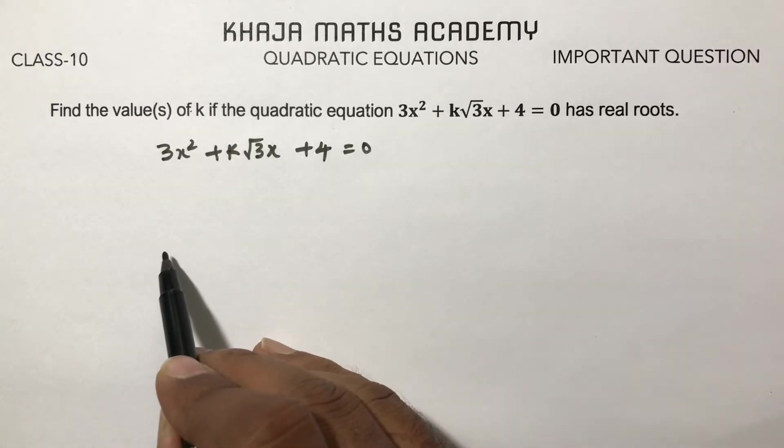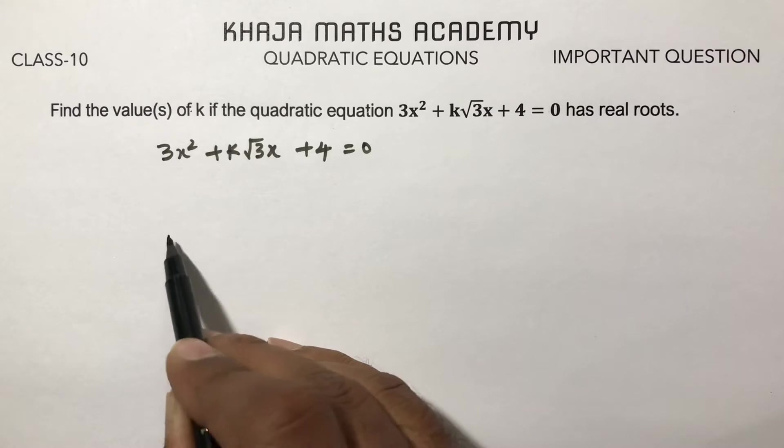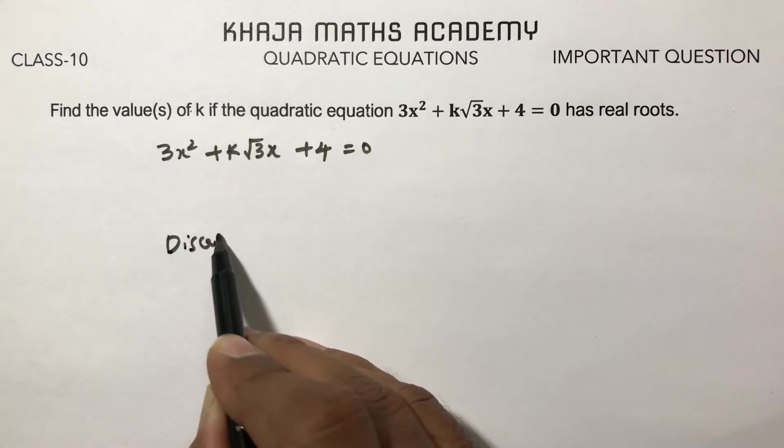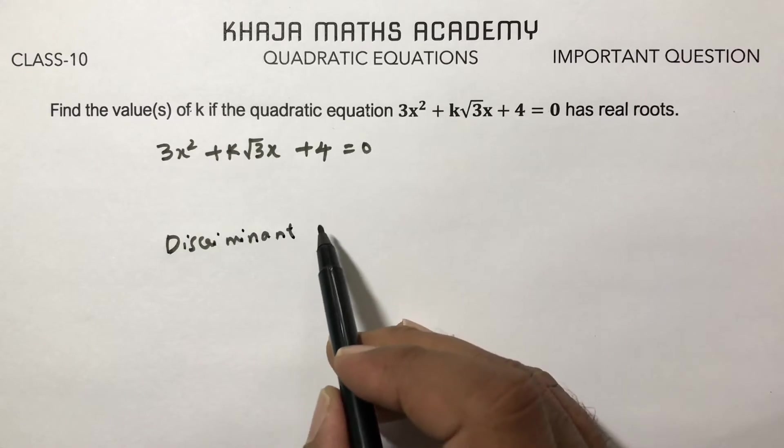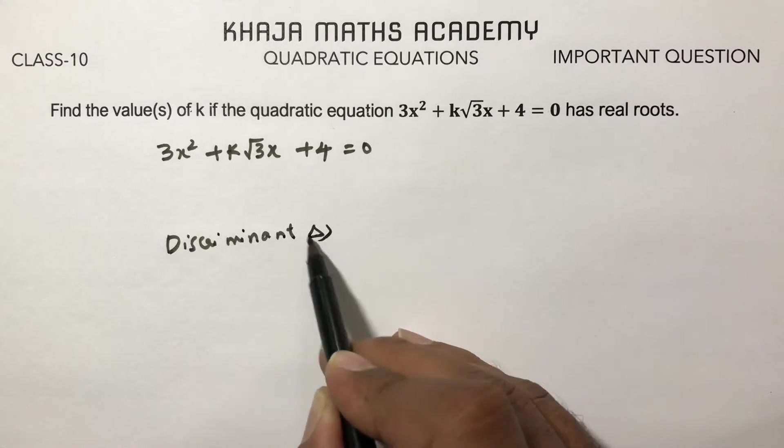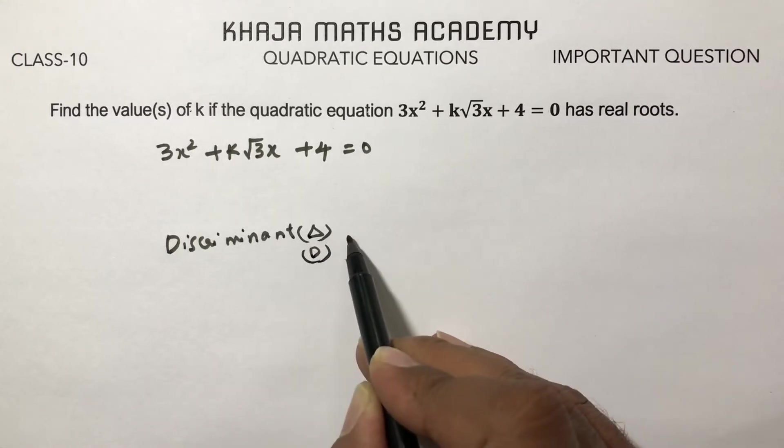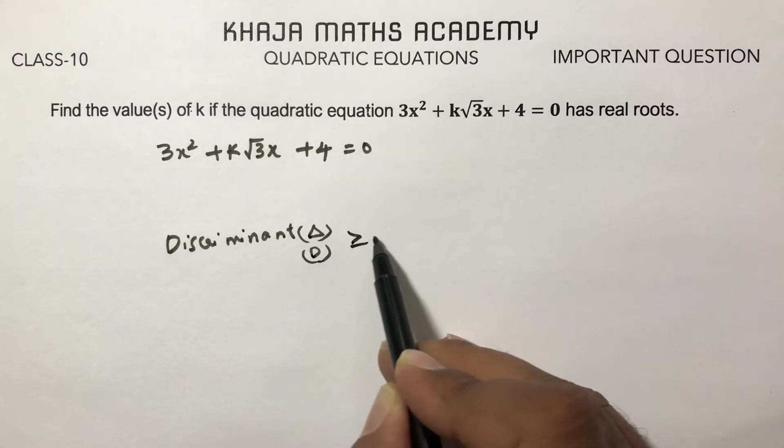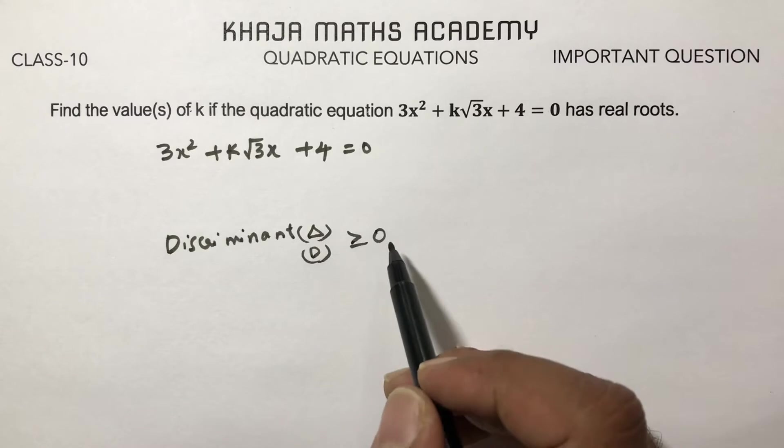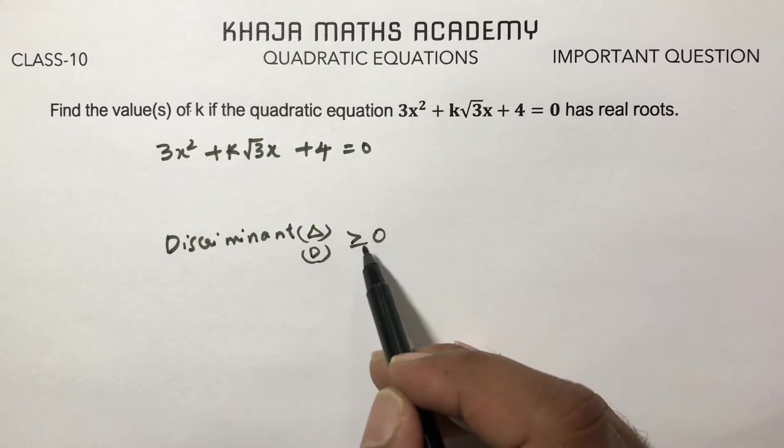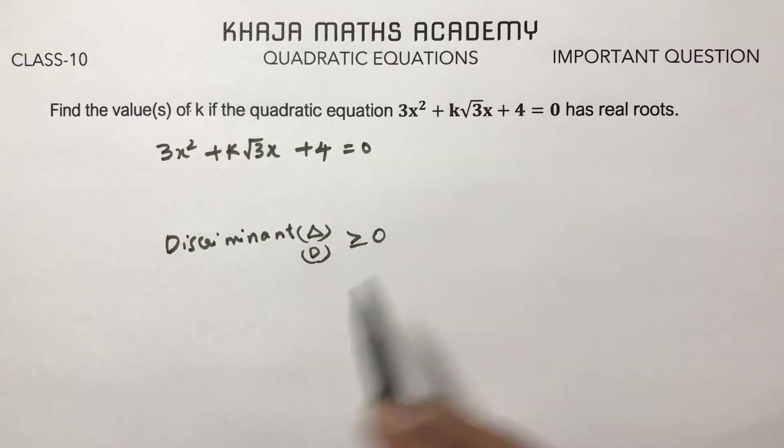For real roots, the discriminant must be greater than or equal to 0. If discriminant is greater than 0, roots are real and distinct. If it equals 0, roots are real and equal. That's why we write greater than or equal to 0 for real roots.